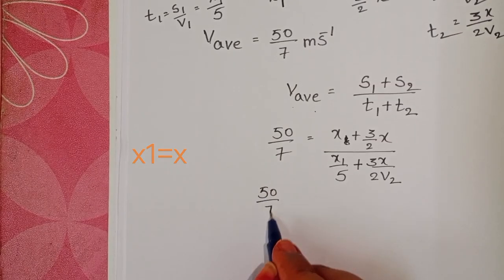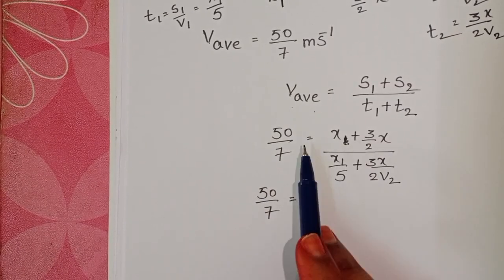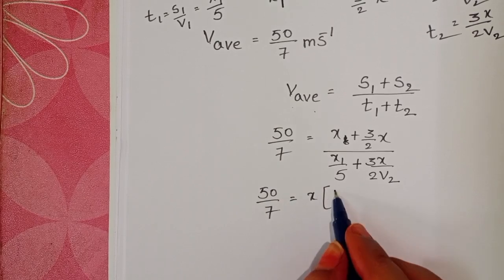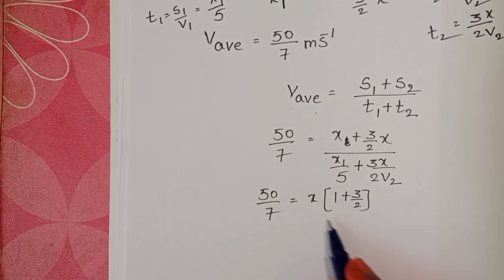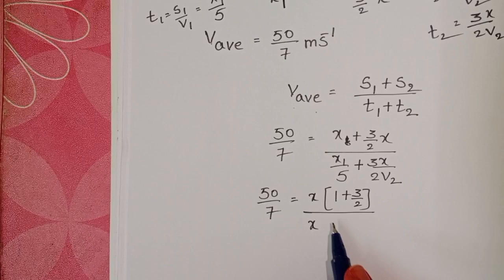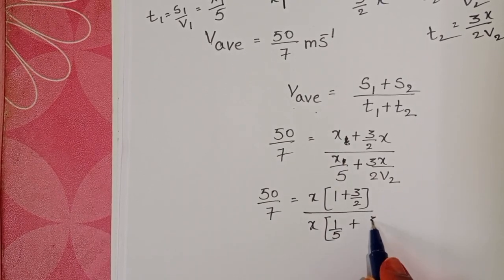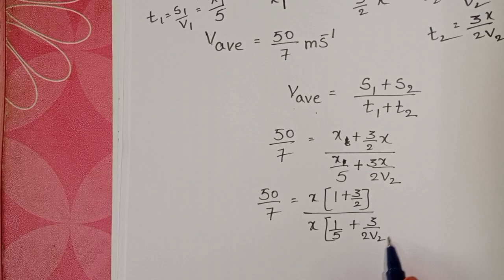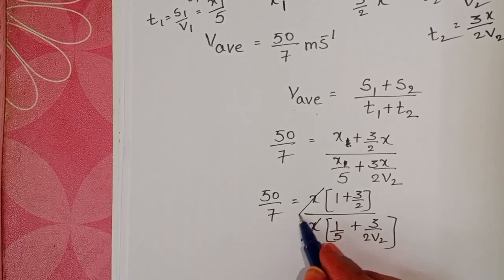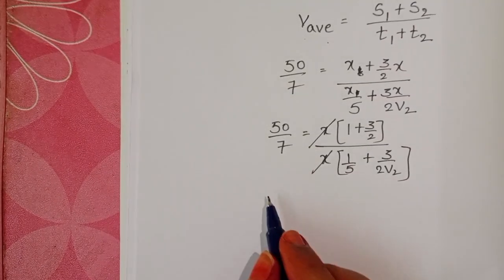50 by 7 equals, in numerator take x common, x into 1 plus 3 by 2, divided by x by 5 plus 3 by 2v2. x gets cancelled. Now take the cross multiplication.